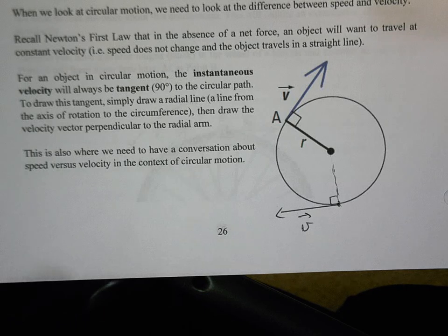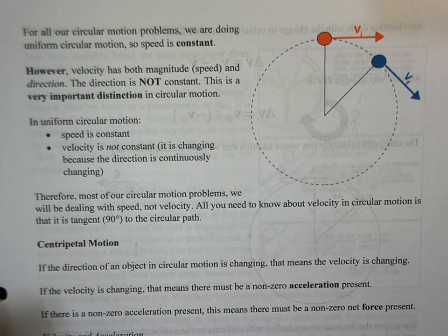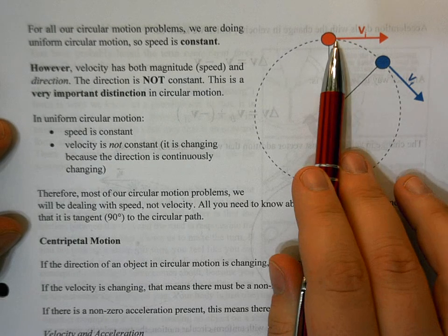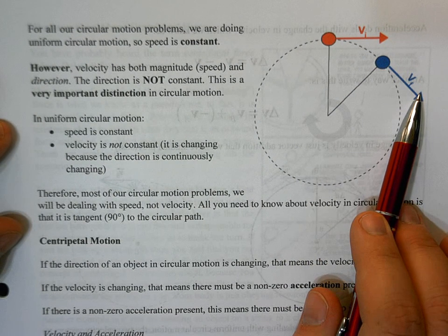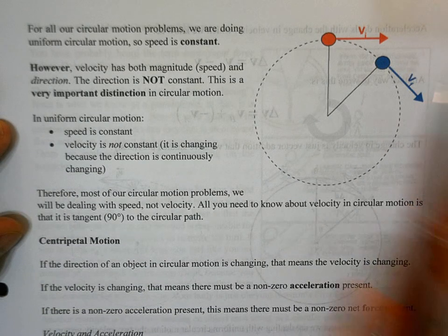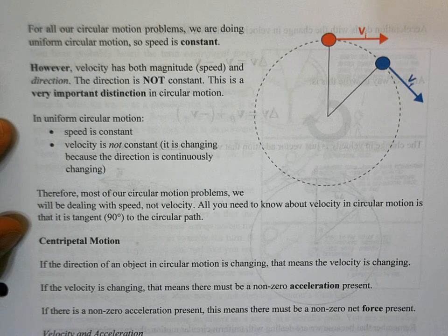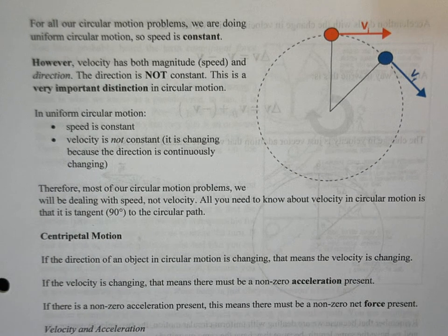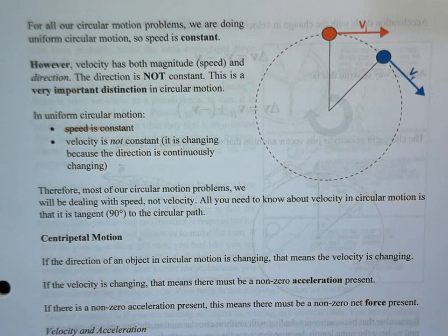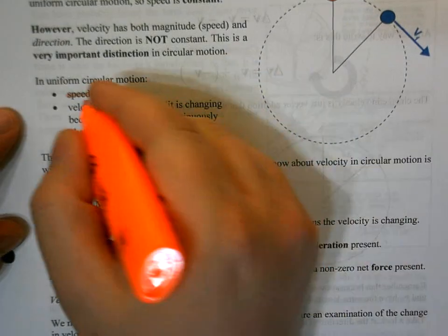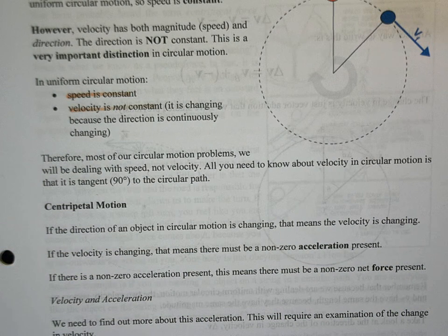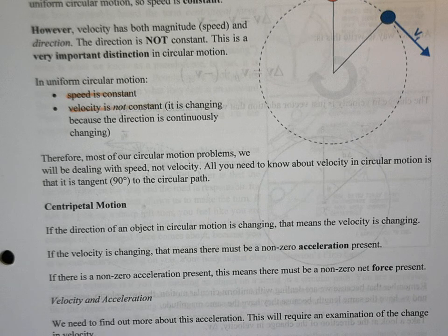We're going to assume the speed is constant, but notice that the direction is not constant — it's continuously changing. These two velocity vectors have the same length, meaning the same magnitude, but they're clearly pointing in different directions. So the big distinction in uniform circular motion is that speed is constant, but velocity is not constant because the direction keeps changing.